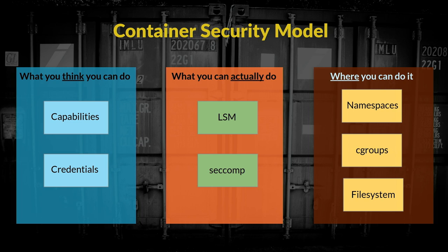This image somewhat conveys how we think about the container security model. The blue is what you think you can do — for example, an unlimited train pass that says you can travel anywhere. Orange is what you can actually do — that train pass is only valid for students or only during weekends. And red is where you can do it — maybe it's only valid on certain train lines in the city. You can't travel throughout the world on it even if you are a student and it is the weekend.